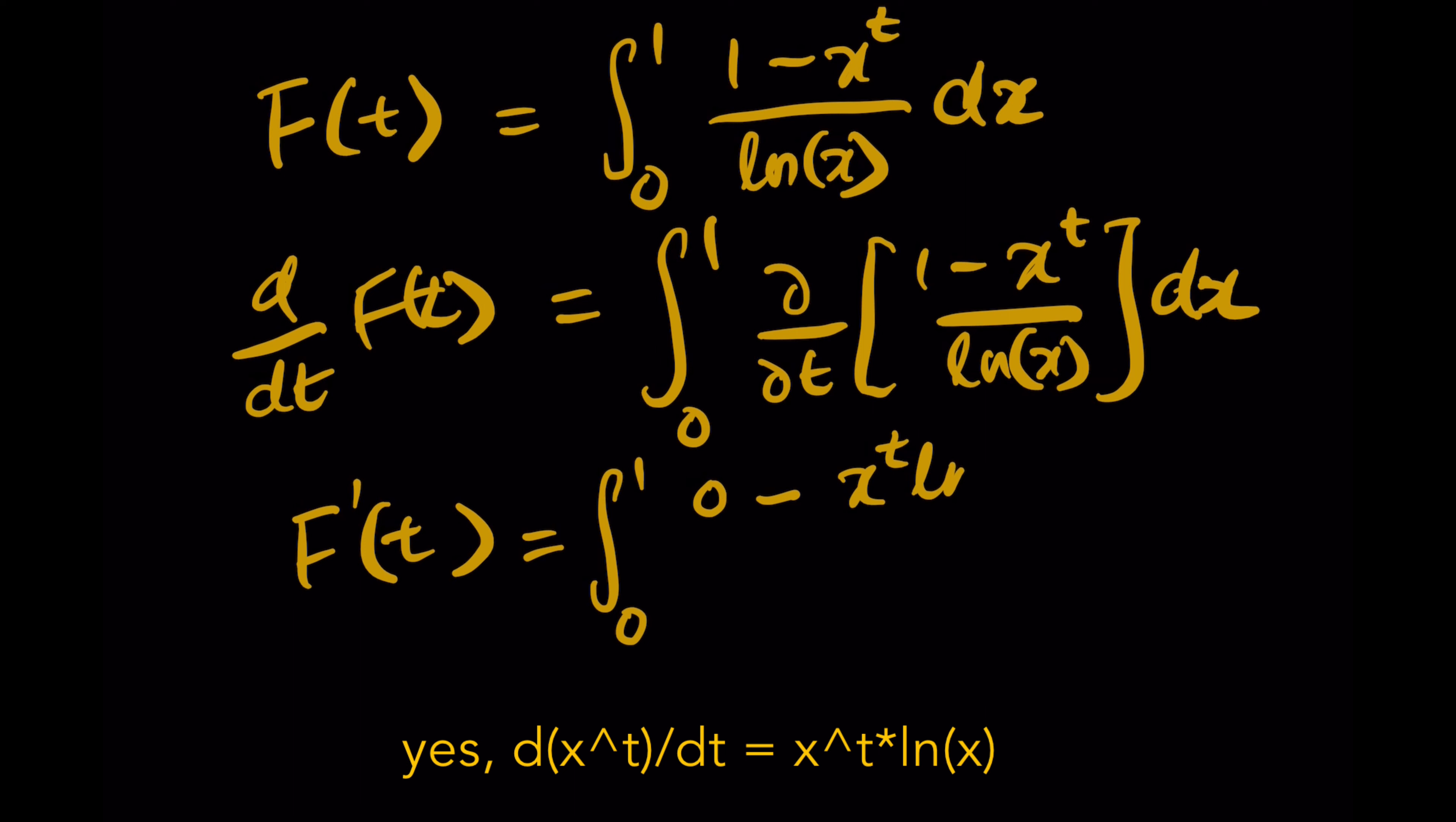This is divided by the original ln(x) dx, so we have ln(x) cancel each other.